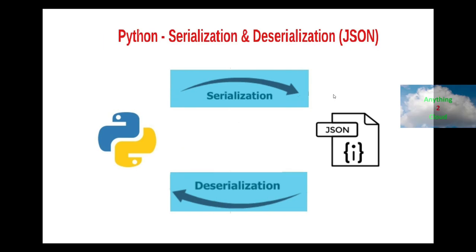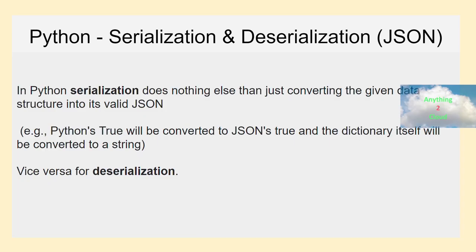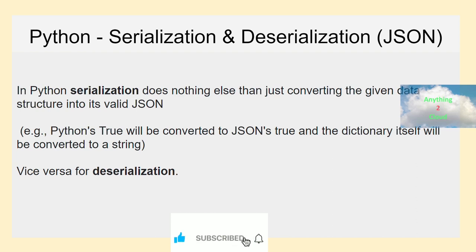Hello everyone. In this video let's quickly see about serialization and deserialization in Python. In Python, serialization does nothing else but converting the given data structure into valid JSON. For example, the Python True will be converted to JSON true — the capital T will convert into small t — and the dictionary itself will be converted to a string. This is what happens when you do serialization.